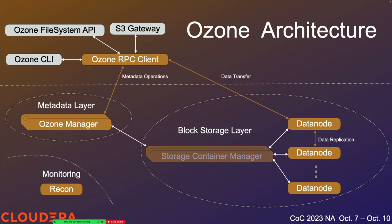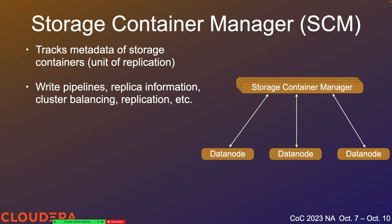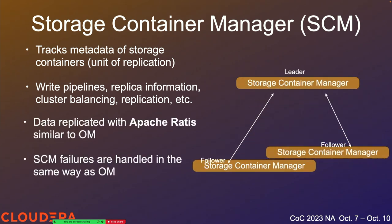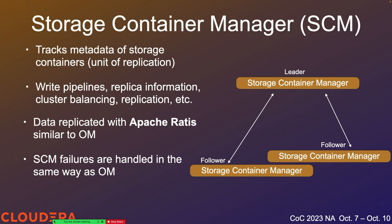Now let's move to the Storage Container Manager. SCM also tracks metadata, but it's tracking metadata about storage containers — Ozone's unit of replication. You can think of a storage container as a five-gigabyte collection of block data mapped back to keys in the Ozone Manager. SCM tracks things like the container name, which nodes have it, whether there are too many or too few copies, and so on. The actual data is in the data nodes. SCM looks similar to OM — we have three of them, also replicated with Ratis, and failure handling is very similar.